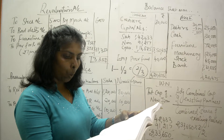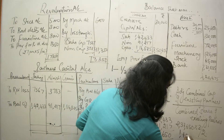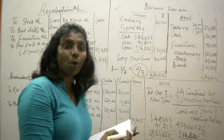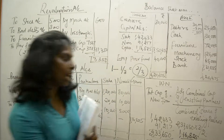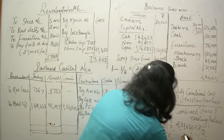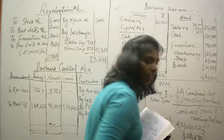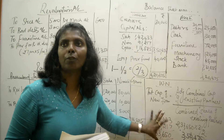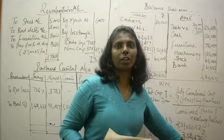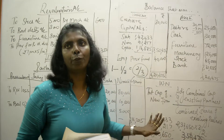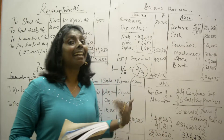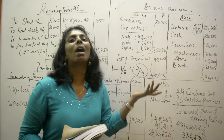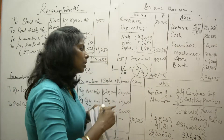The incoming partner's share is one-third, so the remaining share is two-thirds. That remaining share becomes reciprocal — three-by-two — in the formula. So: adjusted combined capital of existing partners multiplied by the reciprocal of their combined share gives the total capital of the new firm. I'm getting the total capital of the new firm as 3,50,475. Out of that, the incoming partner's share is one-third.